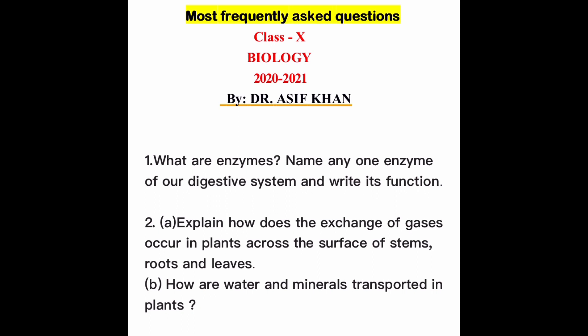Question number 2: Explain how the exchange of gases occurs in plants across the surface of stem, root, and leaf. Remember that plants do not have a respiratory system, so respiration is individual for each part. For stem, mention the openings in the bark of the tree called lenticels. For root, mention the elongation of epidermal cells as root hairs. For leaf, mention stomatal openings for the exchange of gases.